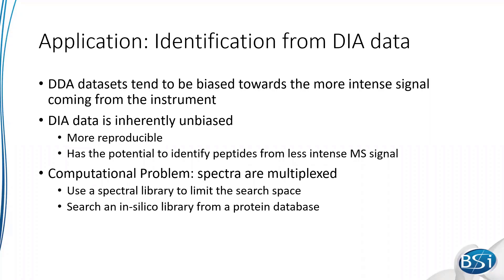There are a couple of different approaches to deal with this. One approach is to use a spectral library, usually generated from a fractionated DDA dataset, and then search the DIA dataset using that library — the idea being to limit the search space to only detectable peptides from the MS/MS spectra. Or, to limit the bias of that, you can create a library from a database and then search it that way, which we call a direct protein identification for DIA data.